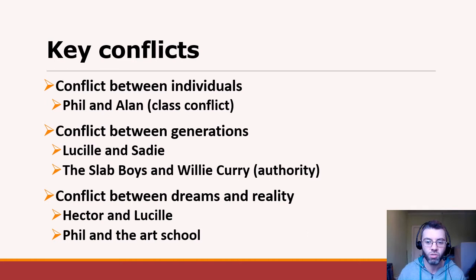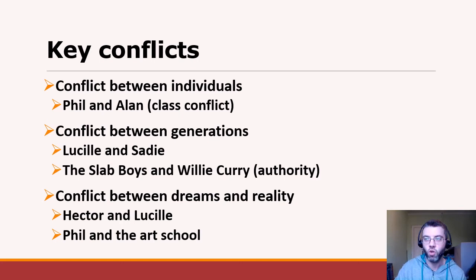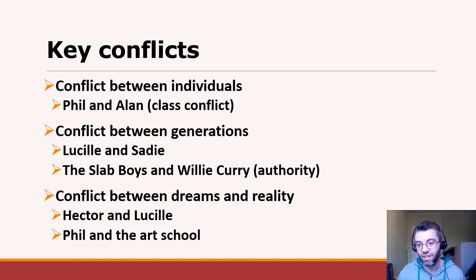For example, with Hector and Lucille — that conflict between dreams and reality — it's not like at the end, when we find out Hector doesn't get Lucille, that this is some kind of surprise. We always knew that was there. Equally, we're not really surprised that Phil doesn't get into art school, because by then we've been primed by various bits of the text. A lot of the time with the dreams-versus-reality theme, what you're really looking for are things that become clear they can't come true, or are extremely unlikely to — and that's where you actually see that conflict manifest.